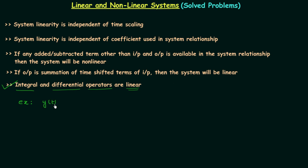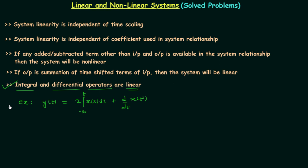In this example, output y(t) is equal to two times the integration from minus infinity to t of x(τ) dτ, plus d/dt of x(t²). This is our system relationship and by using the above properties we will try to find out the nature of the system — whether it is linear or non-linear. We will use the five properties rather than applying the law of additivity and law of homogeneity directly.